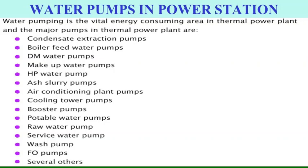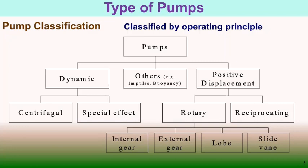Pumps can be classified according to their operating principles, service conditions, and construction. In general we find two major categories: dynamic type and positive displacement type. Dynamic pumps may be centrifugal or special type. Positive displacement pumps may be rotary or reciprocating. In rotary we may have internal gearing, external gearing, lobe pumps, or sliding vane pumps.